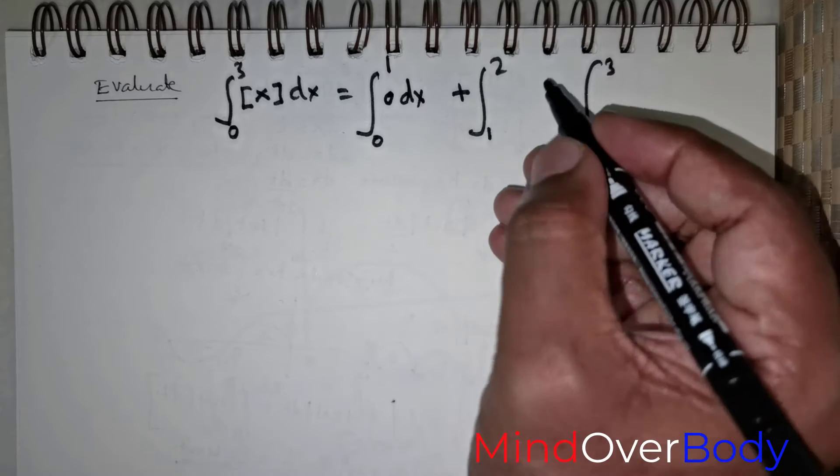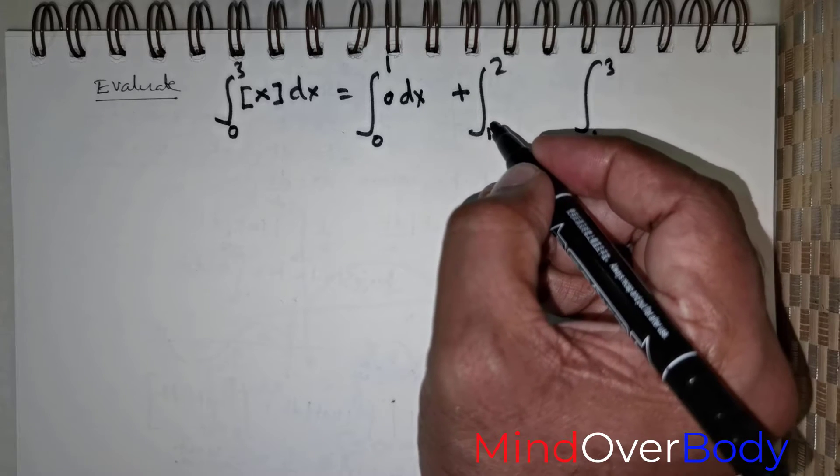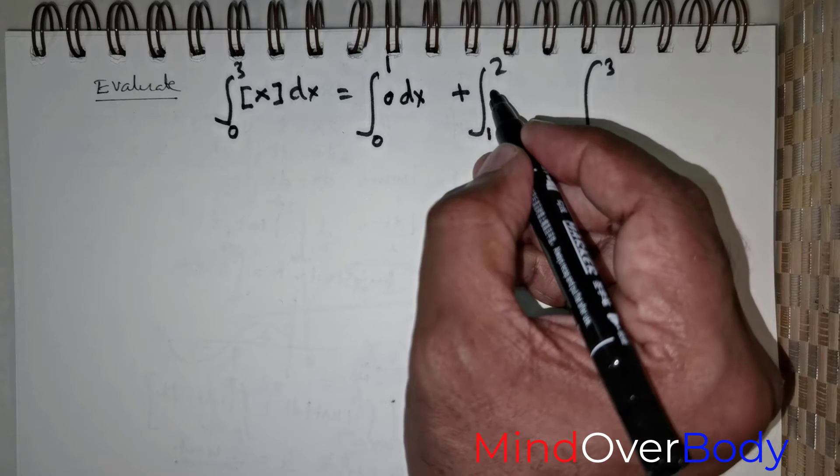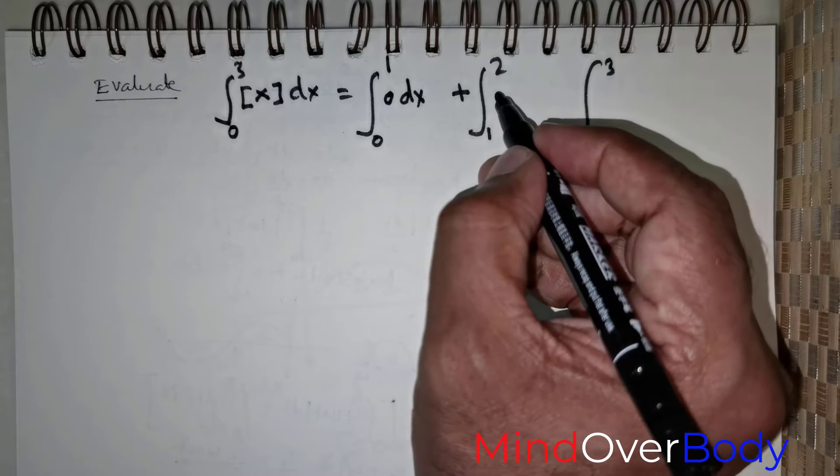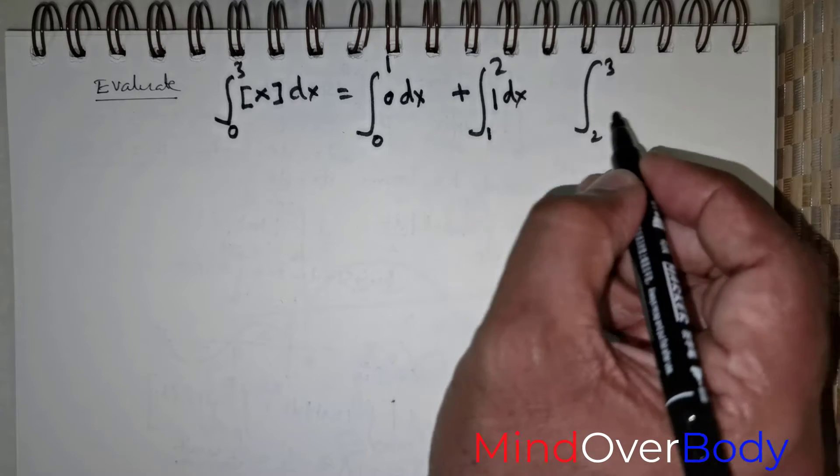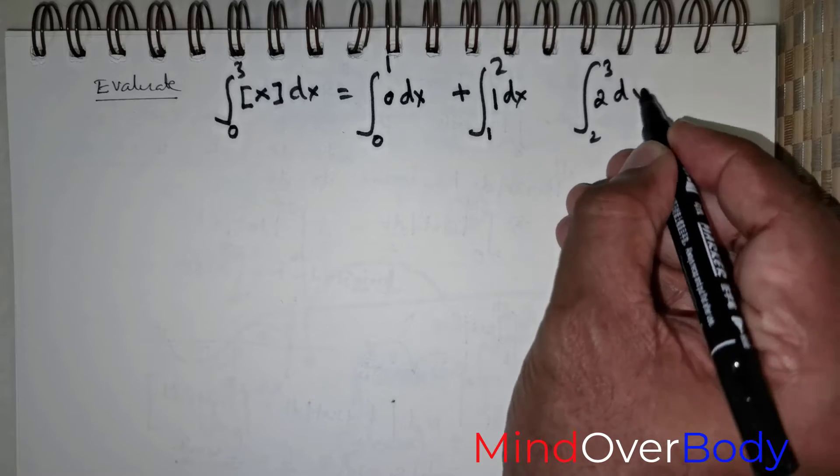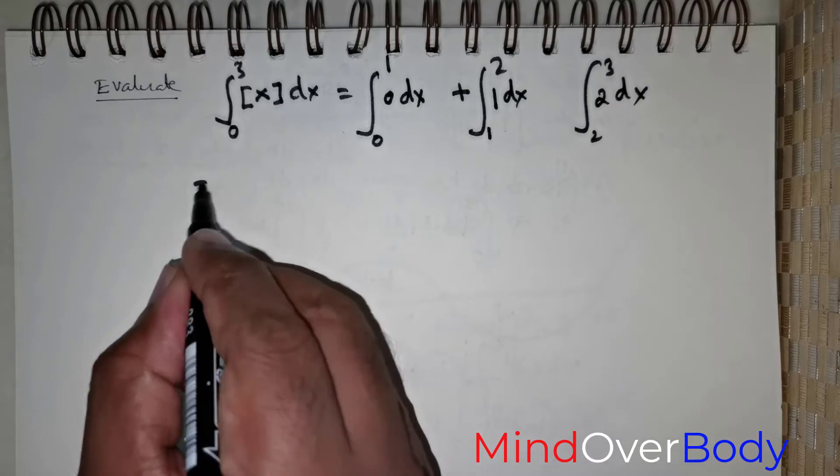So, we need to place the differential operator. In this case, when x varies from 1 to 2, the value of the greatest integer function would be 1 here. And in this case, it is going to be 2 here. So, this is what we need to integrate.